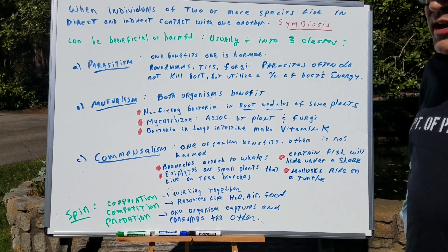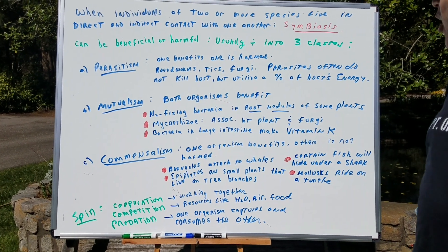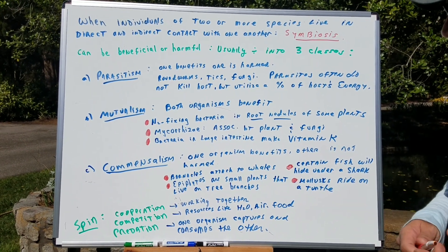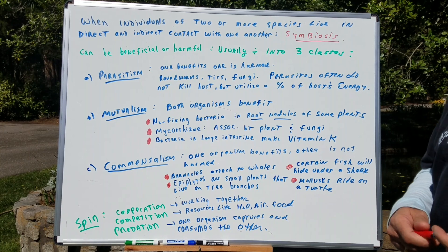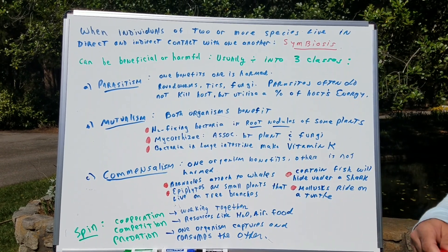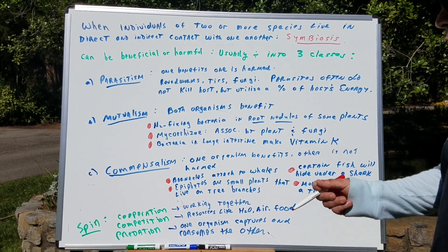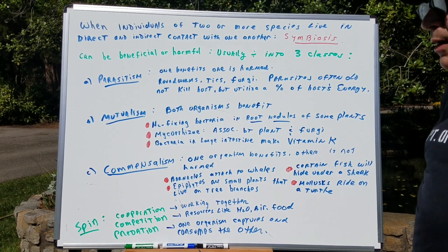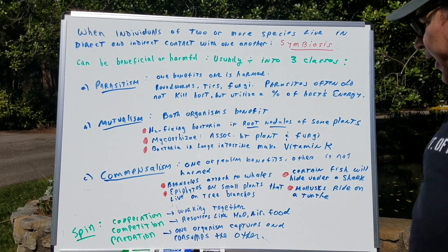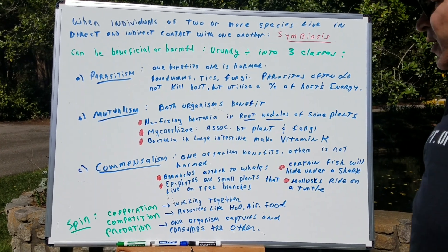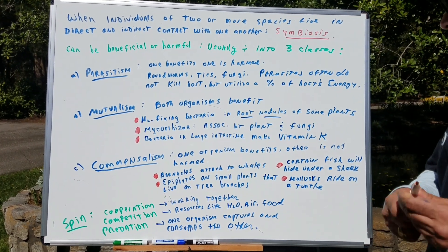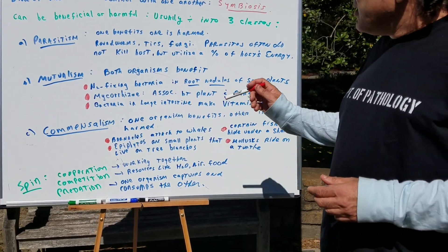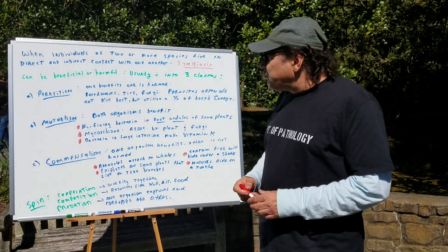Sometimes scientists try to put a spin on this, and they add in things like predation, competition, and cooperation. These are just spins on other symbiotic relationships — cooperation, where animals work together; competition, where we compete for resources like air, water, and food; and of course predation, when one organism captures and consumes the other. These are just spins, but I like to classify them in tradition.